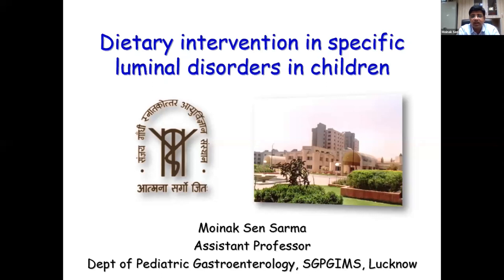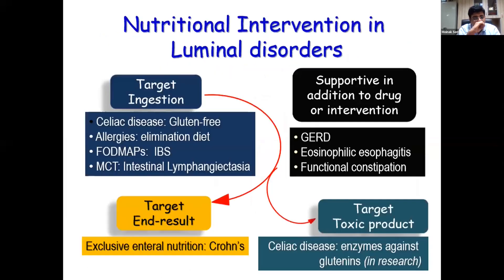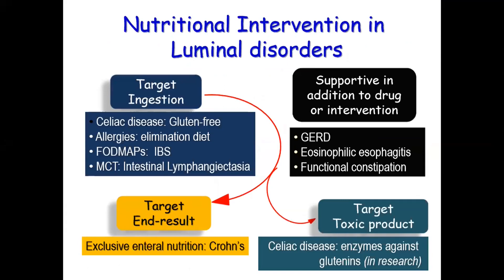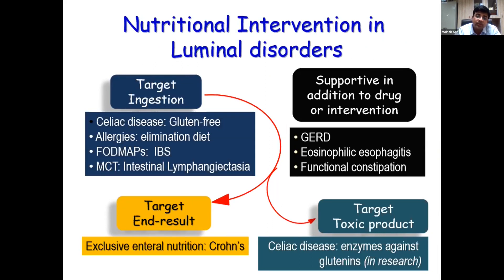The nutritional and intervention disorders in children target three to four areas. One is you target ingestion, like celiac disease, allergies, FODMAPs, which Dr. Ghoshal has very elegantly shown in his slides on irritable bowel syndrome. Or you can target an end result, for example Crohn's disease where you give exclusive enteral nutrition. The third part is you target a toxic product, where in celiac disease people are working on how to give wheat and yet have enzymes that can break down the gluten.